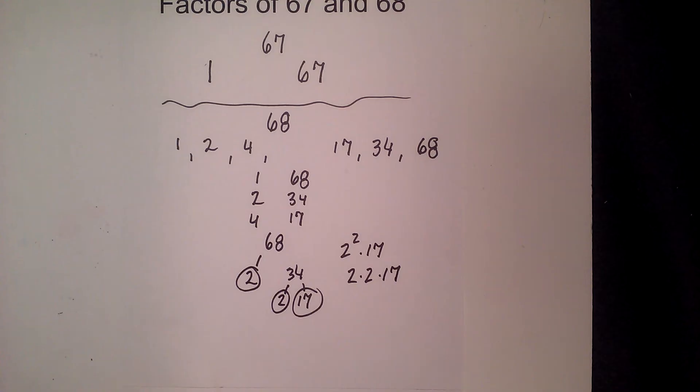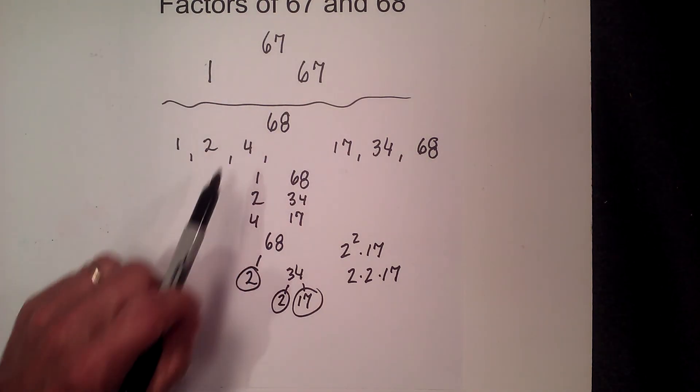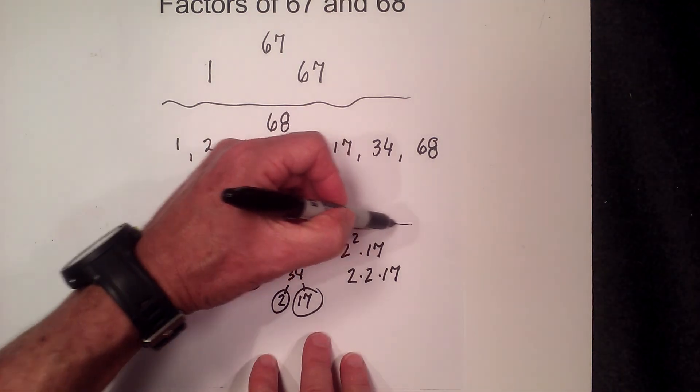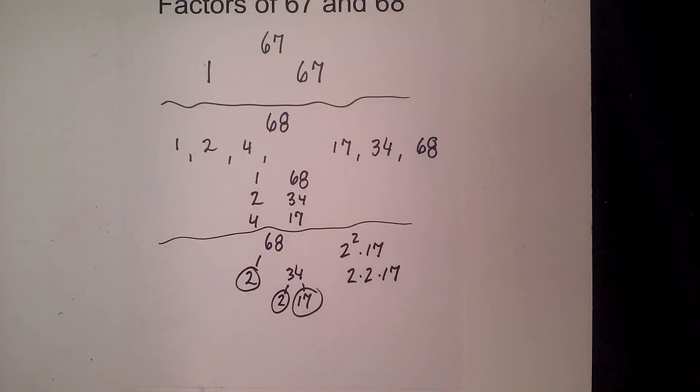So there we go. The factors of 67 and 68, and the prime factors of 68 are right here: 2 times 2 times 17.